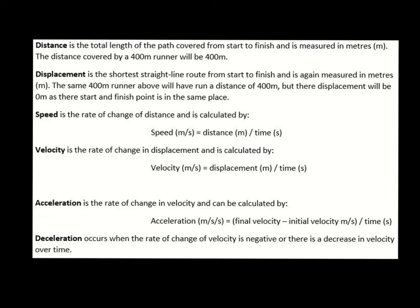Now there are a few key terms and calculations we need to know when looking at linear mechanics. One of them is distance. Distance is the total length of the path covered from start to finish, measured in metres. For example, the distance covered by a 400 metre runner would be 400 metres.